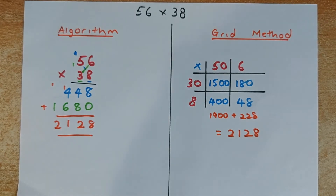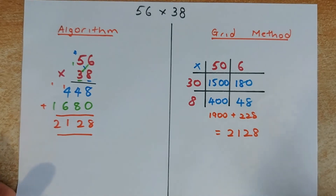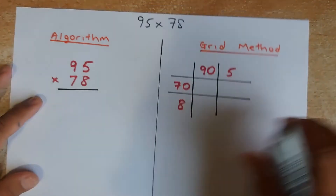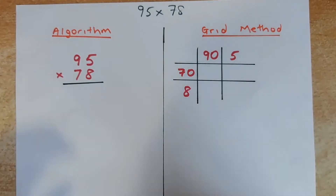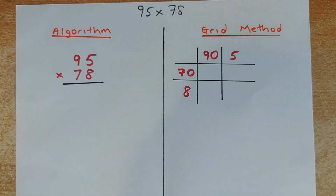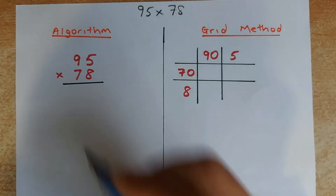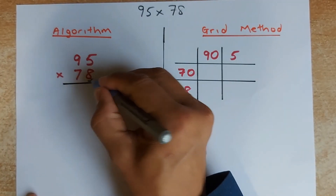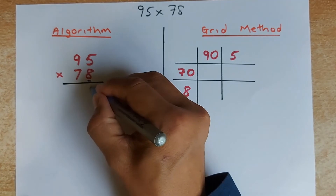So is that clear? So we are now going to do the hardest of the lot, which is the biggest number. So the last example is going to be 95 by 78. So what do you do? Again, you are first going to multiply by 8. So you are going to multiply 5 by 8, which is 40. Zero, and you put 4 to the next number.